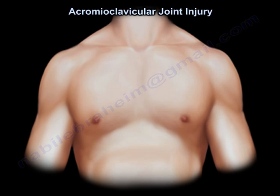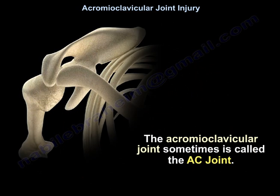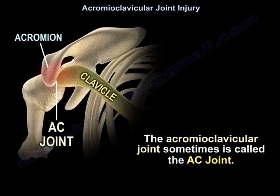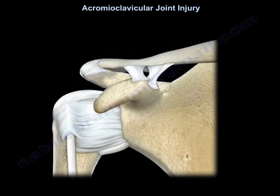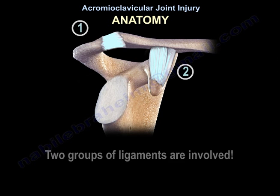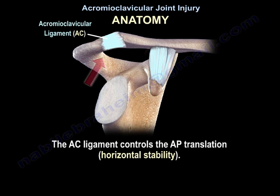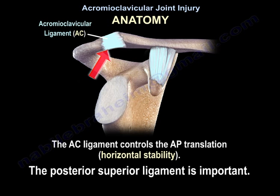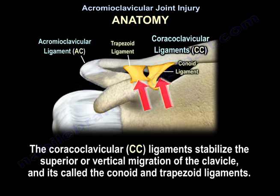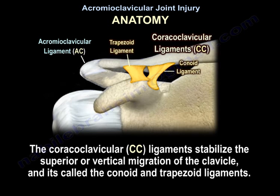Acromioclavicular joint injury — the acromioclavicular joint is sometimes called the AC joint. Two groups of ligaments are involved: the AC ligaments, which control anterior-posterior or horizontal stability (the posterior superior ligament is important), and the coracoclavicular ligaments, which stabilize the superior or vertical migration of the clavicle — these are called the conoid and trapezoid ligaments.